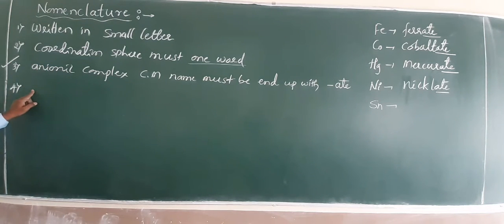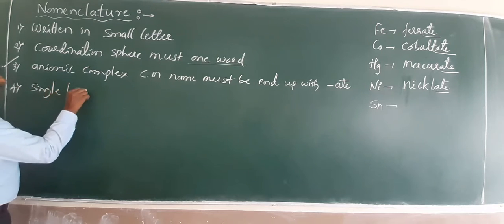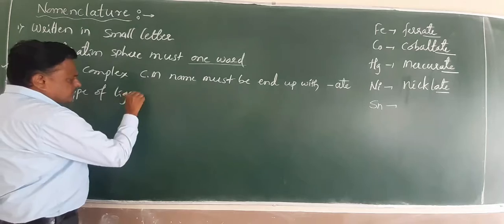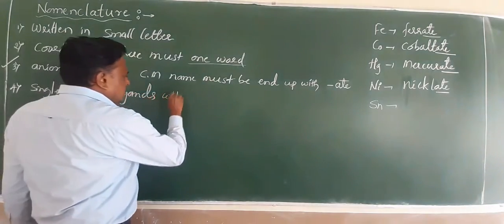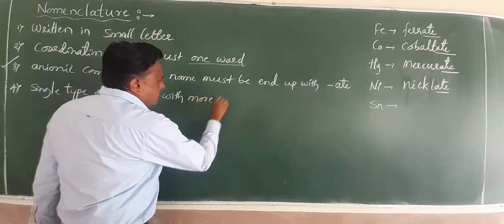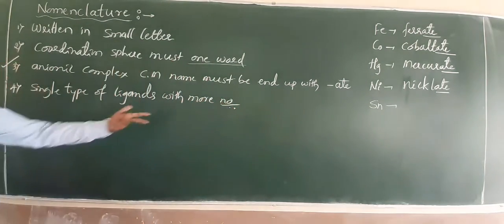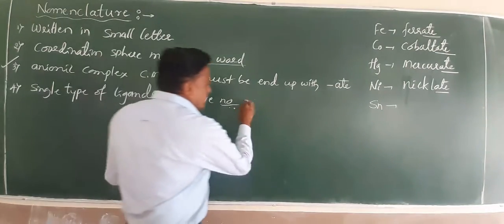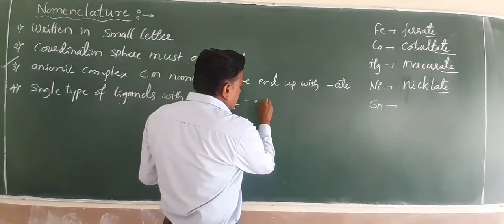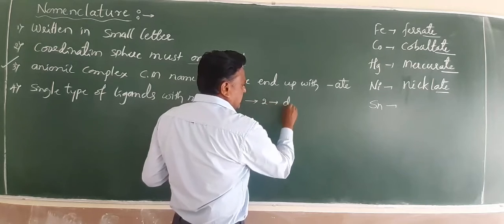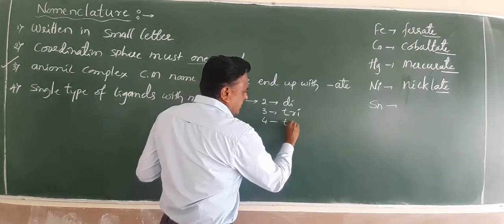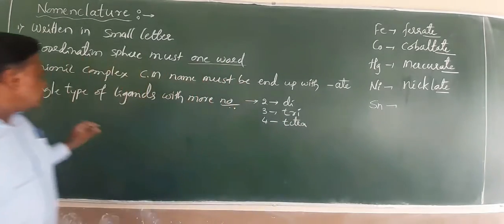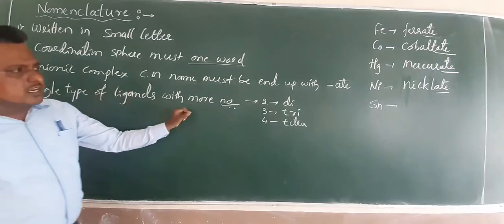If you use a single type of ligand — a homoleptic complex — with more than one of the same ligand, use numerical prefixes: 2 is di, 3 is tri, 4 is tetra, and so on.